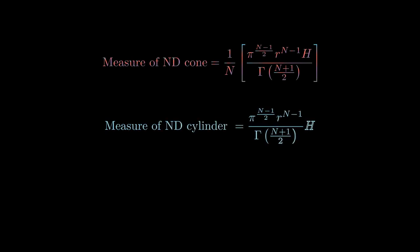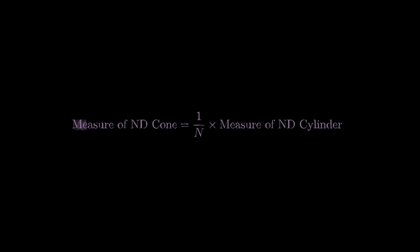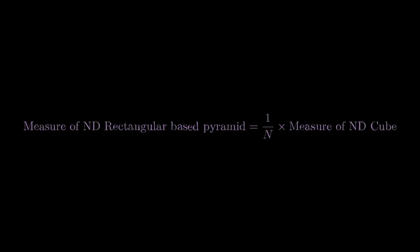And similarly, we can calculate the ND measure of a cylinder. And it shows the ND measure of a cone is one nth the ND measure of a cylinder. And the measure of an ND rectangular-based pyramid is one nth of the measure of an ND cube. And the measure of a simplex in N dimensions is one nth of the measure of an ND triangular prism.